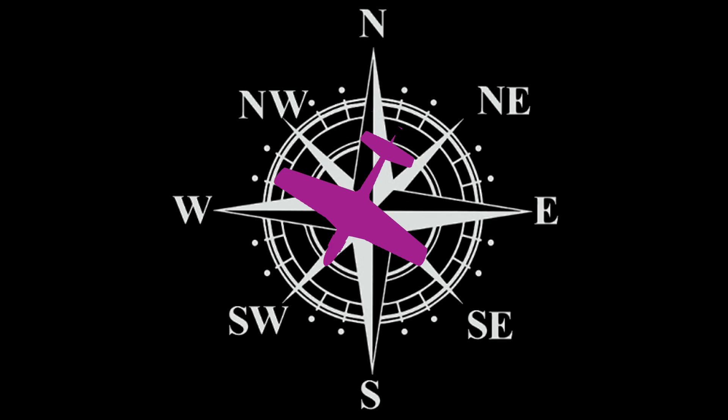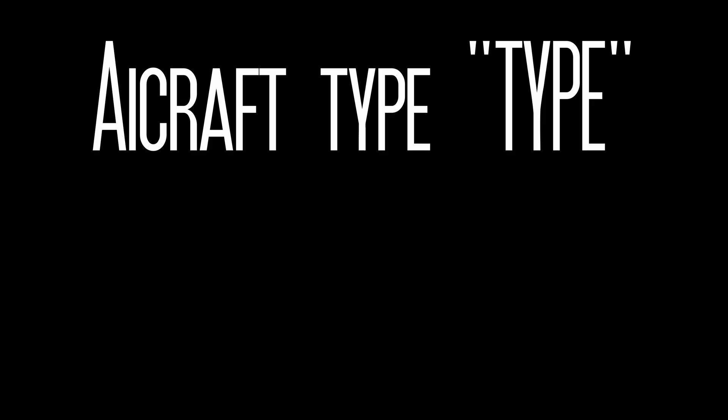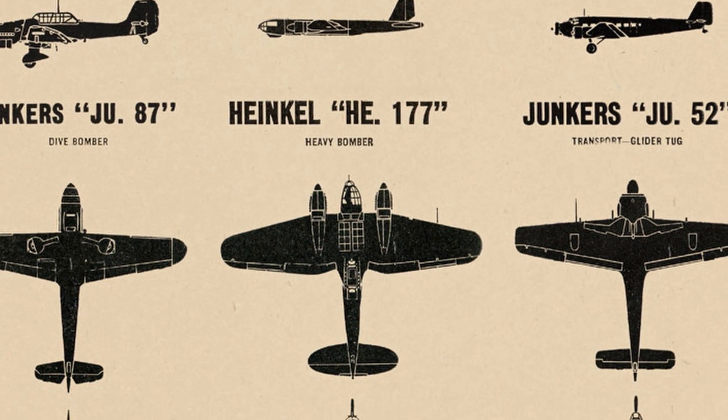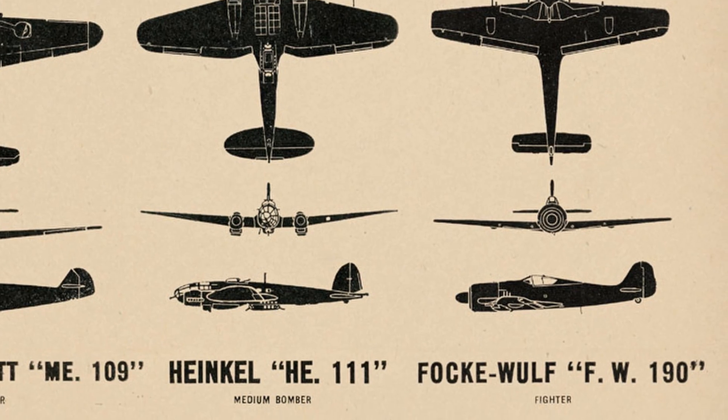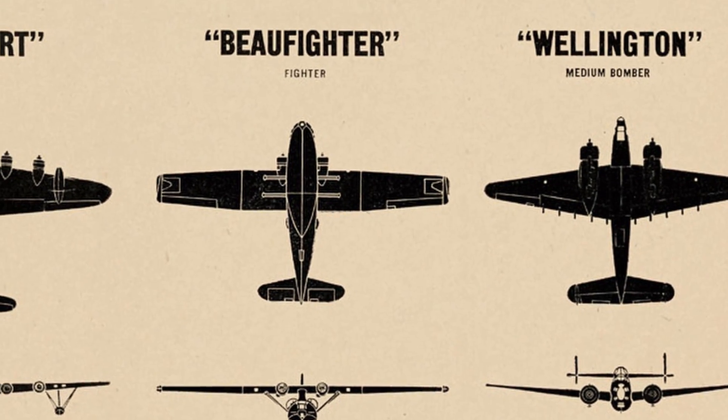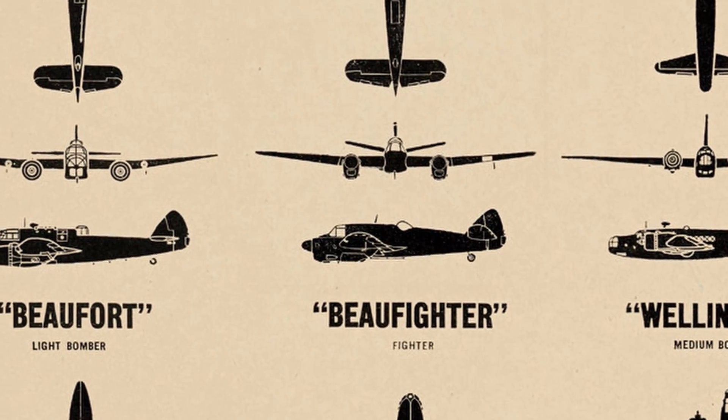Similar to the bearing response is the heading response. This also uses the cardinal points and represents the last known heading of the contact — the direction the contact itself is moving across the map. The final response you may get from the radar controller is the type of the contact. For enemy contacts the most likely response is going to be unknown; however, for friendly contacts you will often be given the type of aircraft that the radar is tracking.